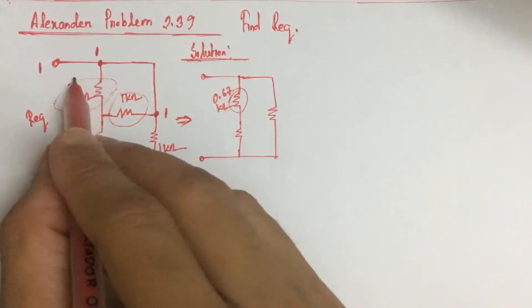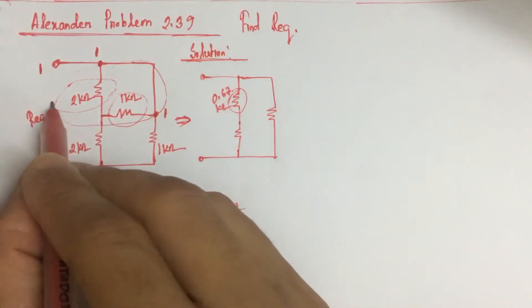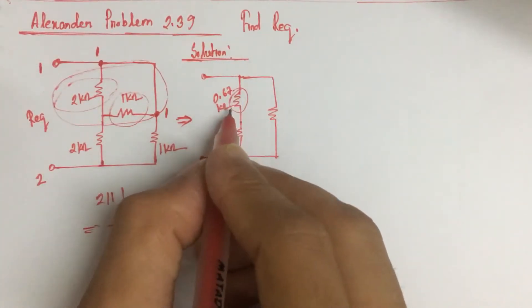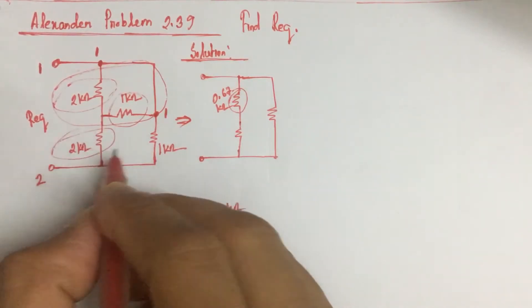Now this resistance is after combining those 2 resistances. This 0.67 kilo ohm is in series with this 2 kilo ohm resistance.